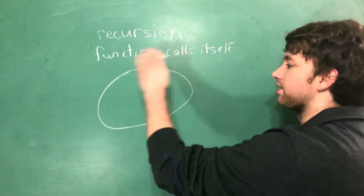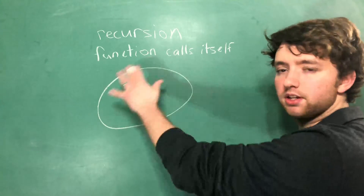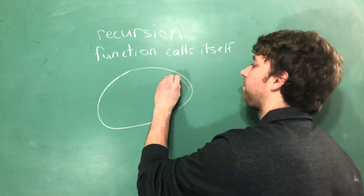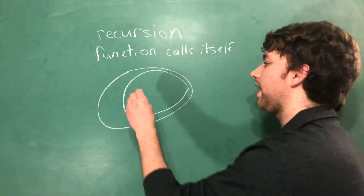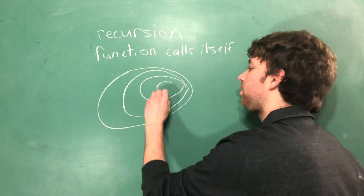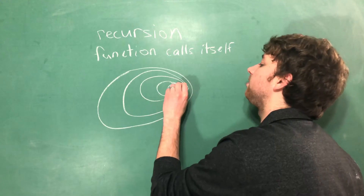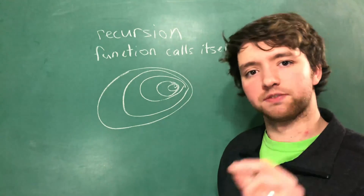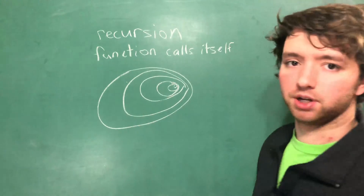So you pass in this entire piece of data and you want it to do something with all of it. What's going to happen is it's actually going to call the same function with a smaller piece of data, and then that smaller version is going to call a smaller version, and a smaller version, until you get to the smallest version — and then you're going to go back up and finish the big one.